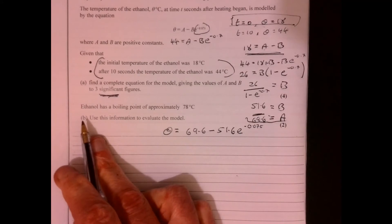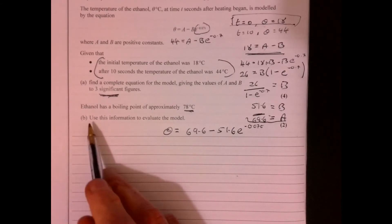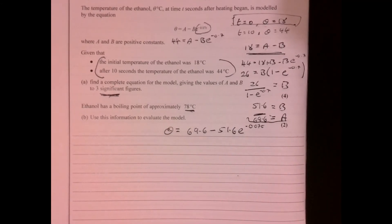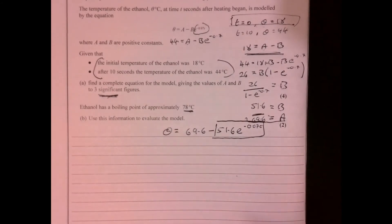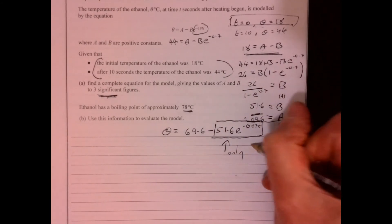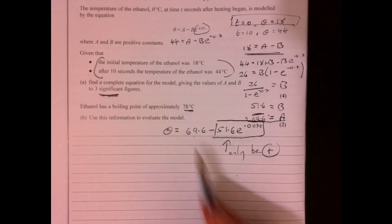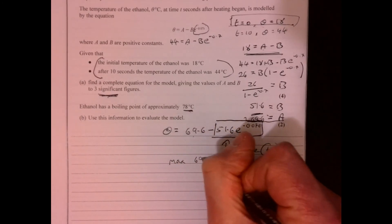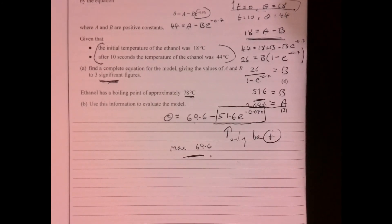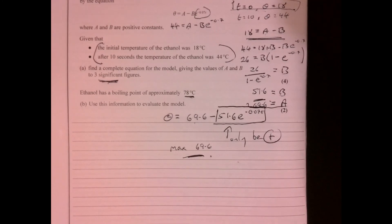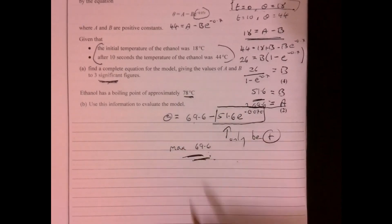Let's have a quick look at part B. It says ethanol has a boiling point of approximately 78 degrees. So use this information to evaluate the model. Well, let's think about what the answer to this could be. This could only be a positive. So therefore, the max is actually going to be 69.6. It can't go more than that, can it? So actually, maybe it's not the best. It's quite a distance off, isn't it? So just make some sort of comment there at the end.